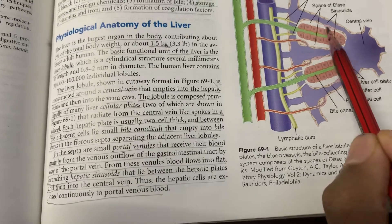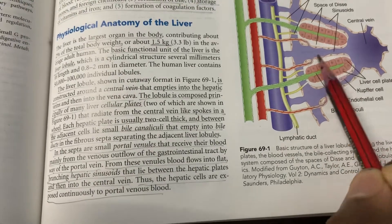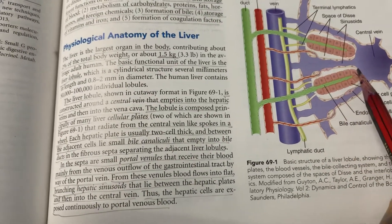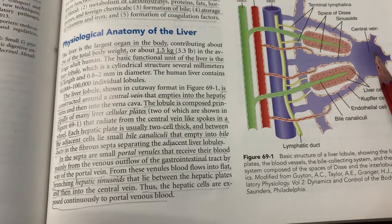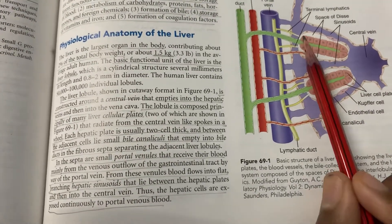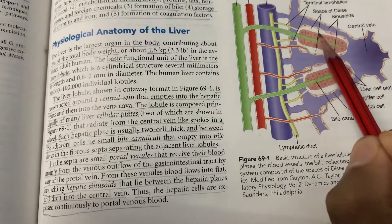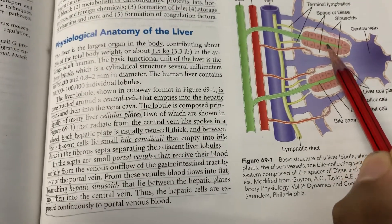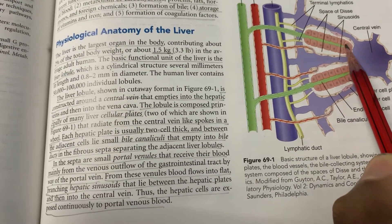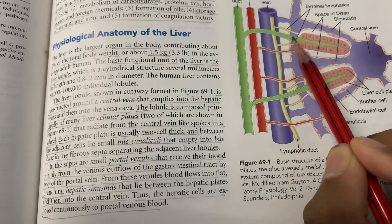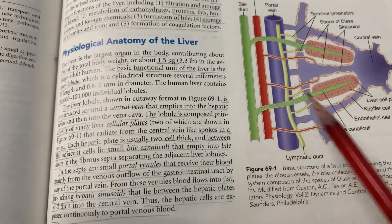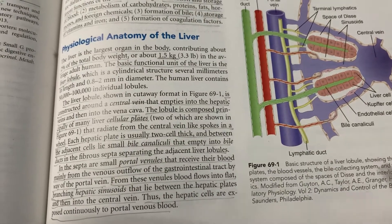The lobule is composed principally of many liver cellular plates, which radiate from the central vein like spokes in a wheel. Each hepatic plate is usually two cells thick, and between these two cells lie the small bile canaliculi that empty into bile ducts in the fibrous septa separating the adjacent liver lobules.